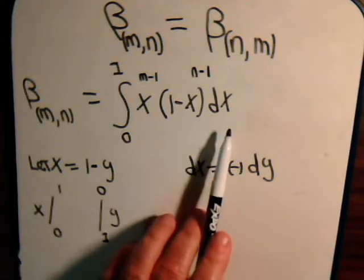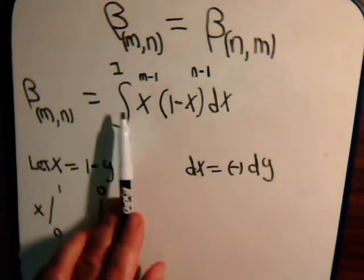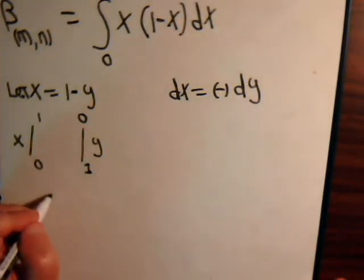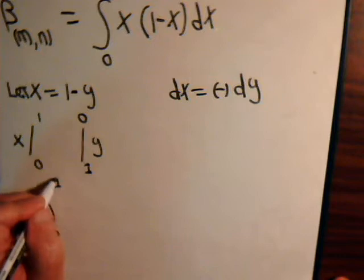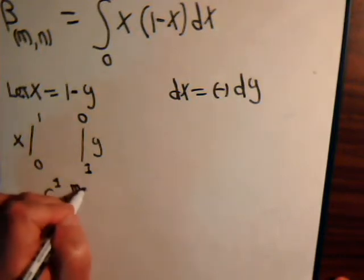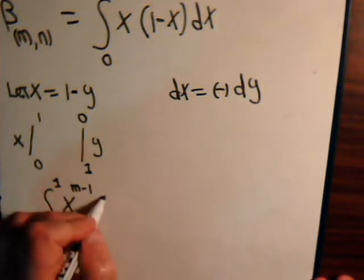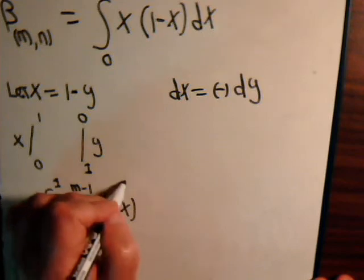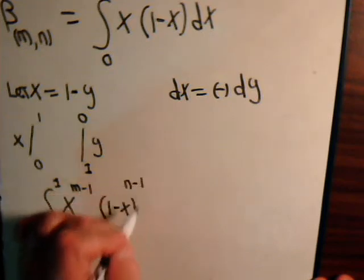So let's consider our initial integral. We have from 0 to 1, x to the (m minus 1) times (1 minus x) to the (n minus 1) dx.